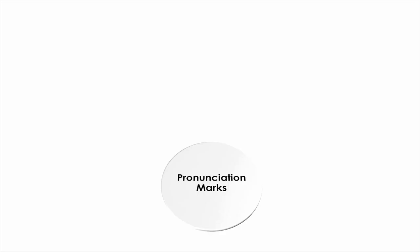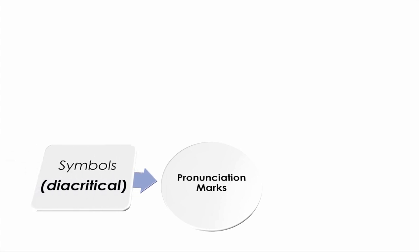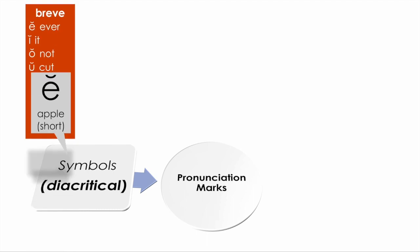We start with pronunciation marks, which are used for correct pronunciation throughout the text. They are expressed by symbols over vowels — for example, diacritical marks. We may have a curved symbol over the vowel called a breve. The breve indicates the short sound of the vowel, like in the words 'ever,' 'it,' 'not,' and 'cut.'